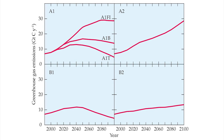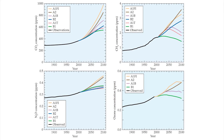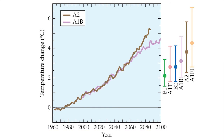Each of these emission scenarios is equally likely. They serve as if-then statements: if human activity follows scenario W, then a GCM predicts that the amount of greenhouse gas emissions will be X, atmospheric concentrations of the greenhouse gases will be Y, and the climate will be Z — in terms of temperature, precipitation, storms, etc.